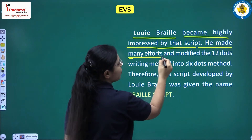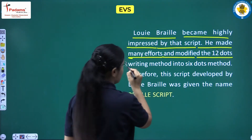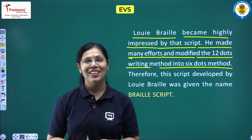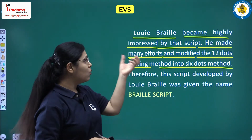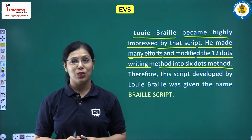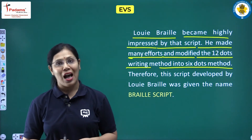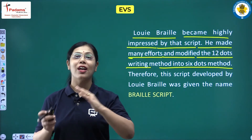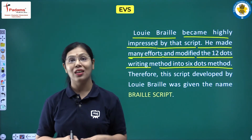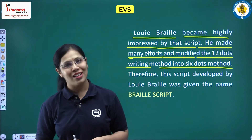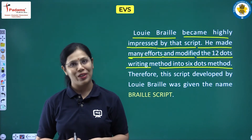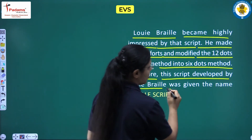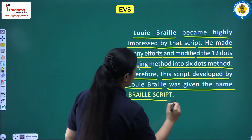Louis Braille made many efforts and modified the 12-dot writing method into a 6-dot method. This is the invention of Braille script — he was inspired by the army captain's script and simplified it. The new 6-dot method was then given the name Braille script.